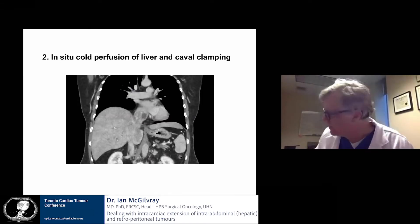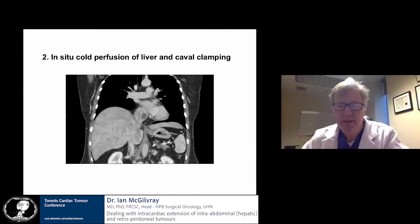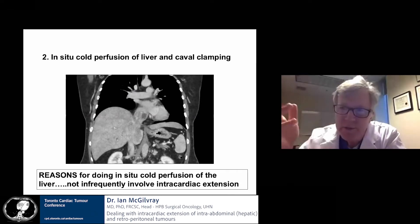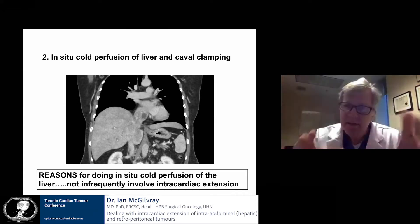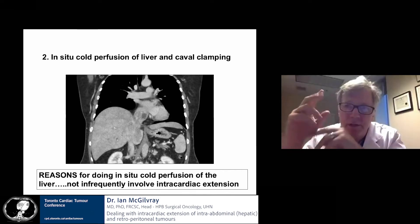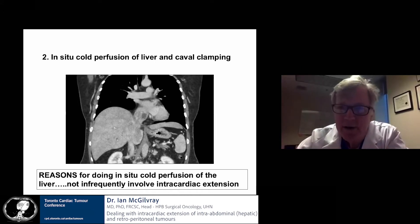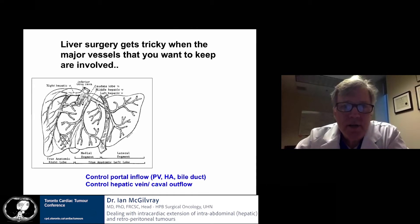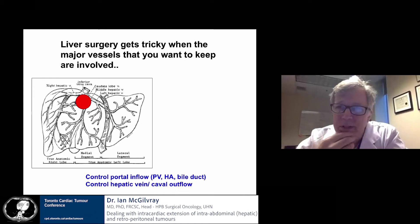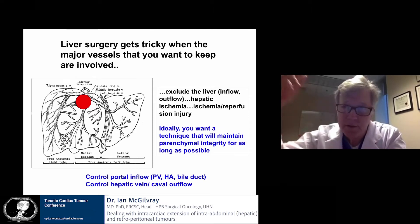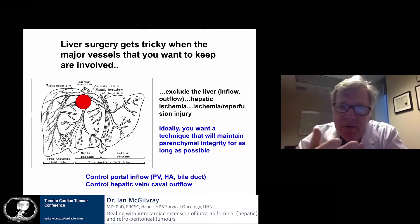Now I'll talk about in-situ cold perfusion of the liver and caval clamping. The reasons for doing in-situ cold perfusion for a hepatic tumor not infrequently involve intracardiac extension of a caval tumor, adrenal tumor, or renal tumor — because anytime you have to replace the cava, you're going to have to clamp the liver to exclude blood flow. Liver surgery gets tricky when the major vessels you want to keep are involved. If you're going to rebuild the cava, you're going to have to exclude the liver — clamp the inflow and clamp the outflow, whether that's the lower atrium or cava. As soon as you do that, the liver starts to die.